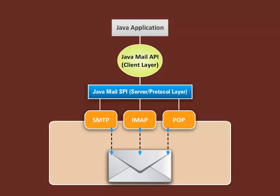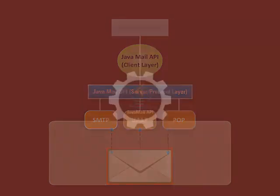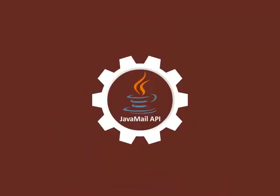Let's now have a brief look into the Java Mail architecture. A Java application uses the Java Mail API to compose, send, and receive emails. The SMTP, IMAP, and POP protocols transfer the message packages from the server side to the client side.